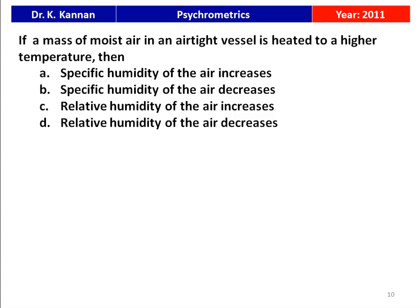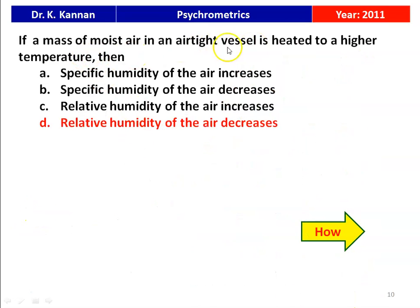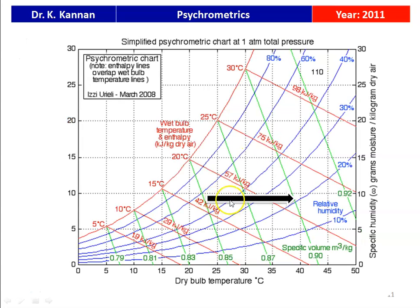The next question is from the 2011 question paper. If a mass of moist air in an airtight vessel is heated to a higher temperature, does specific humidity increase, specific humidity decrease, relative humidity increase, or relative humidity decrease? Since it is an airtight vessel being heated, the relative humidity decreases. From the psychrometric chart, this is a sensible heating process — temperature increases and relative humidity decreases, from approximately 70 percent down to about 30 percent.